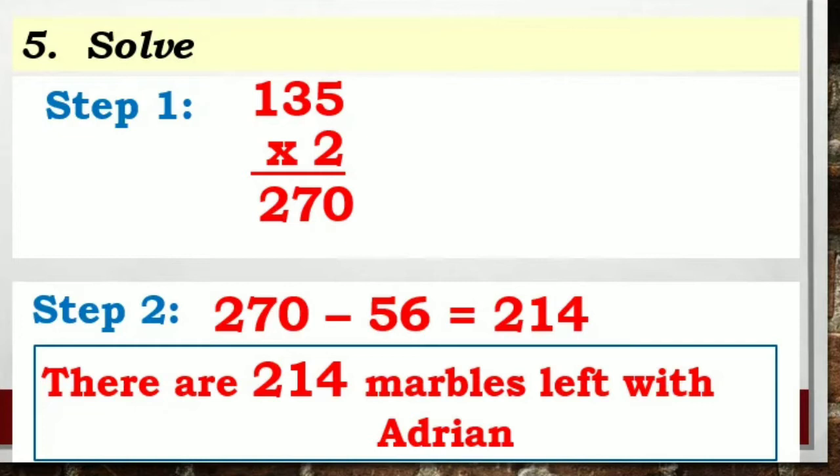135 marbles times 2 boxes is 270. Hindi pa iyan ang final answer. Dahil step 2, 270 minus 56 na kanyang pinamigay equals 214. Ibig sabihin, there are 214 marbles left with Adrian.